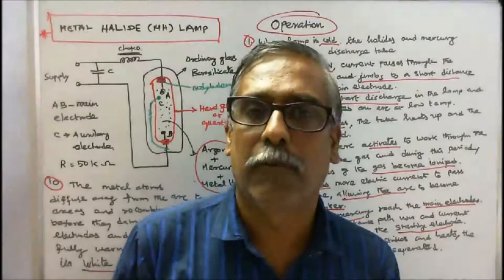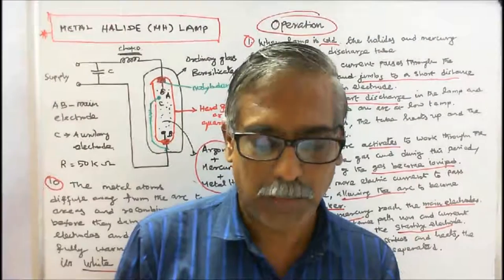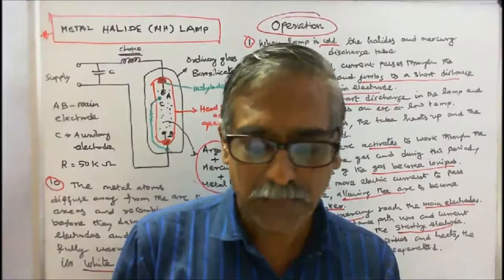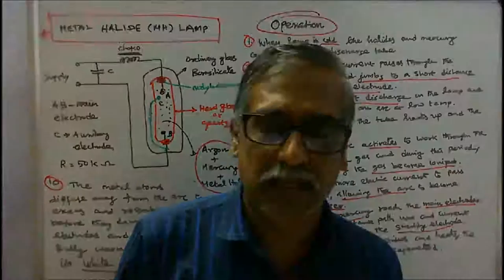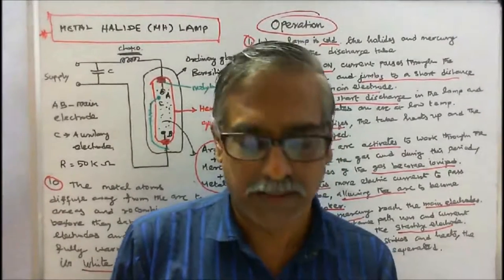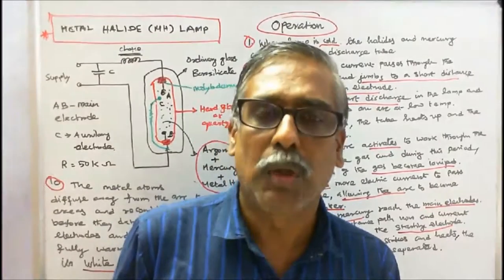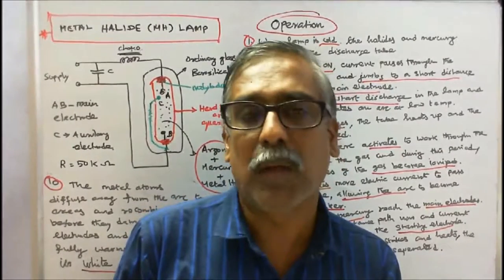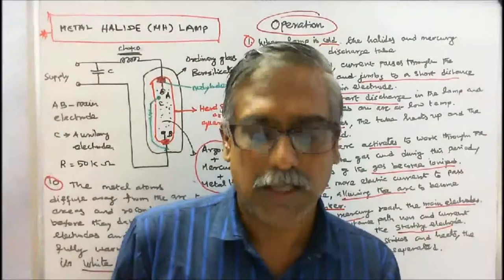Applications of metal halide lamps: 1. These lamps are suitable for flood lighting, industrial lighting, and general lighting. 2. Outdoor lighting where good color rendering is needed.